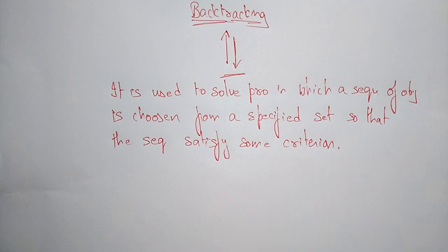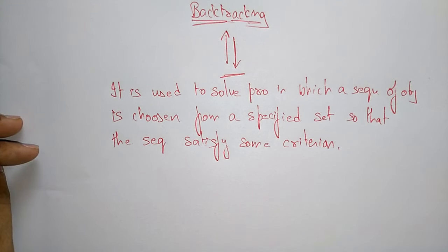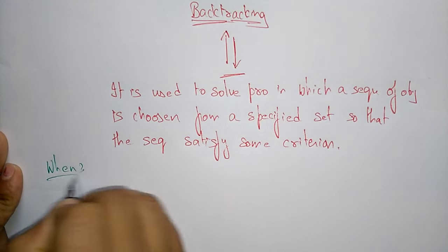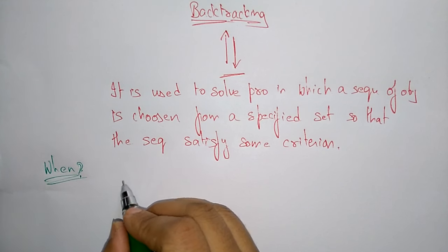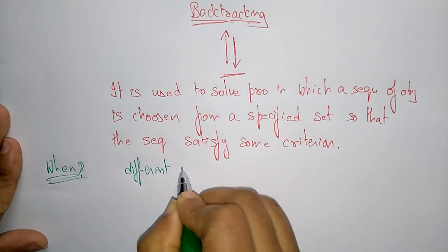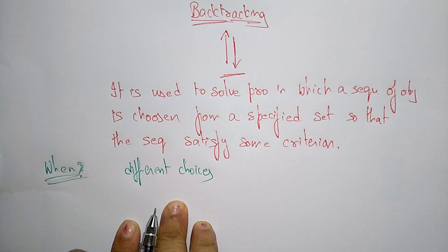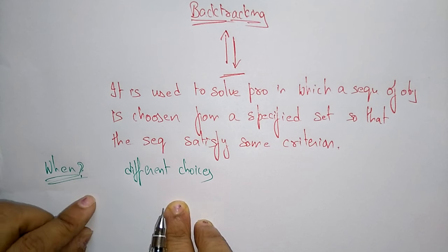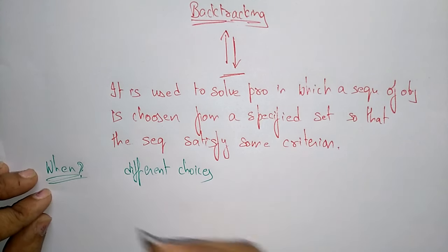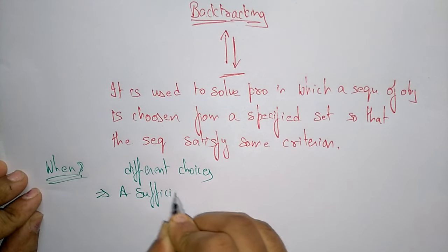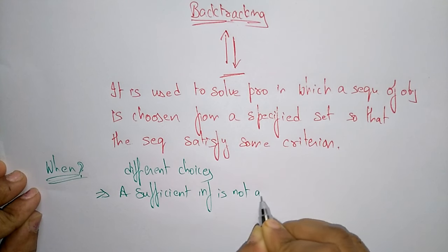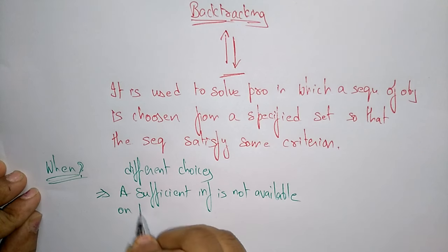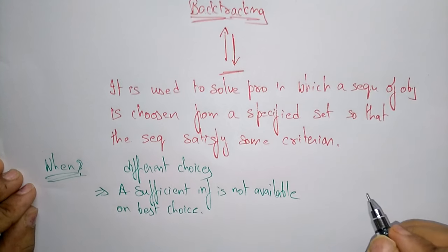When using backtracking, there is a sequence of decisions to be made from a number of available choices. Different choices will be present, and from those we have to select and take a decision. There is a sequence of decisions to be made from different choices where sufficient information is not available on the best choice.